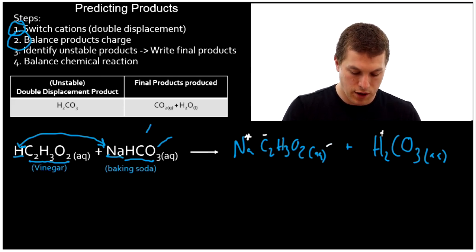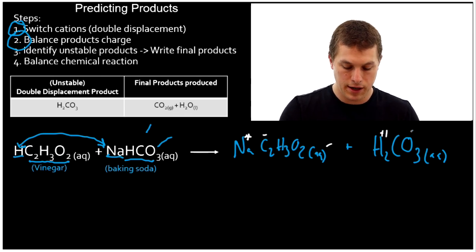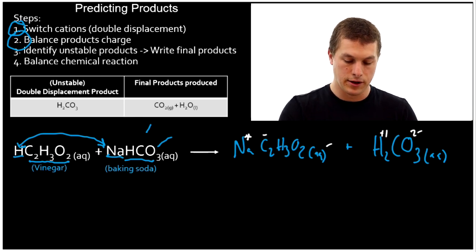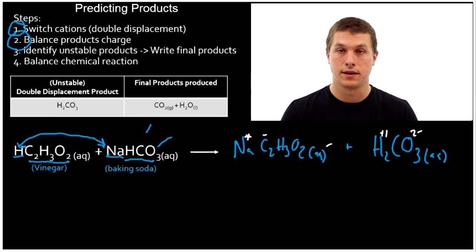Similarly, we have plus one for our hydrogen, two times. That's plus two. And our carbonate is two minus. So in this case, our charges are already balanced. So that's good. So our compounds are neutral. In a minute, we'll do an example where that's not the case.